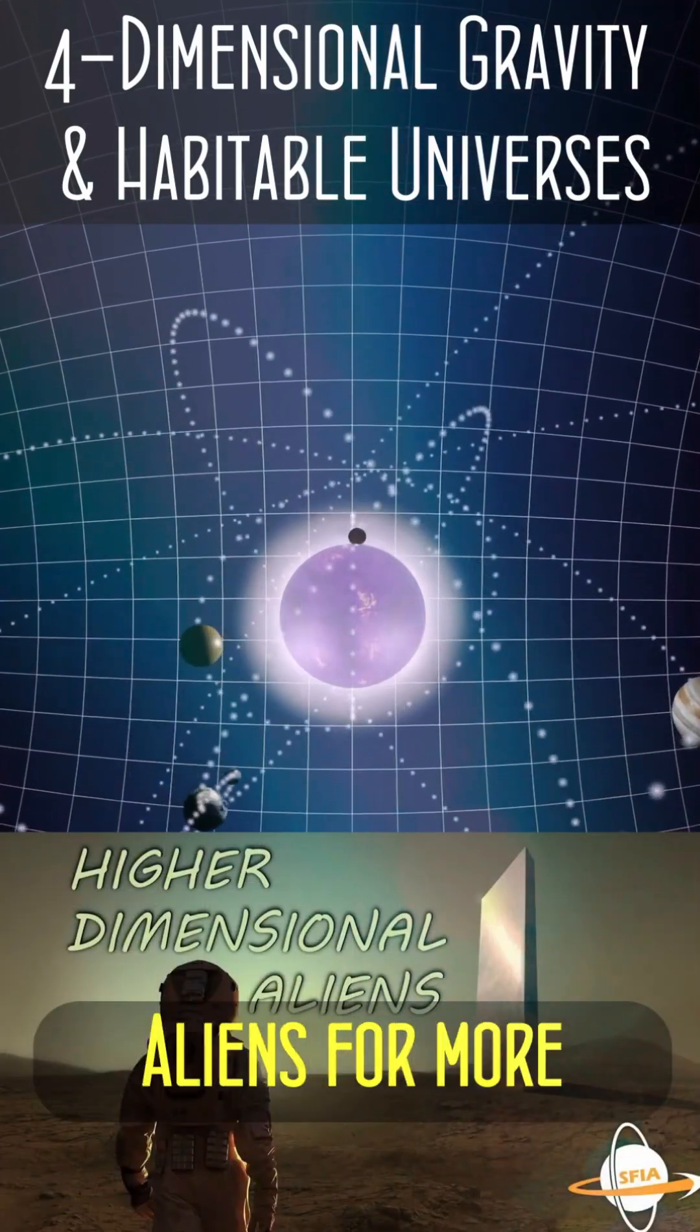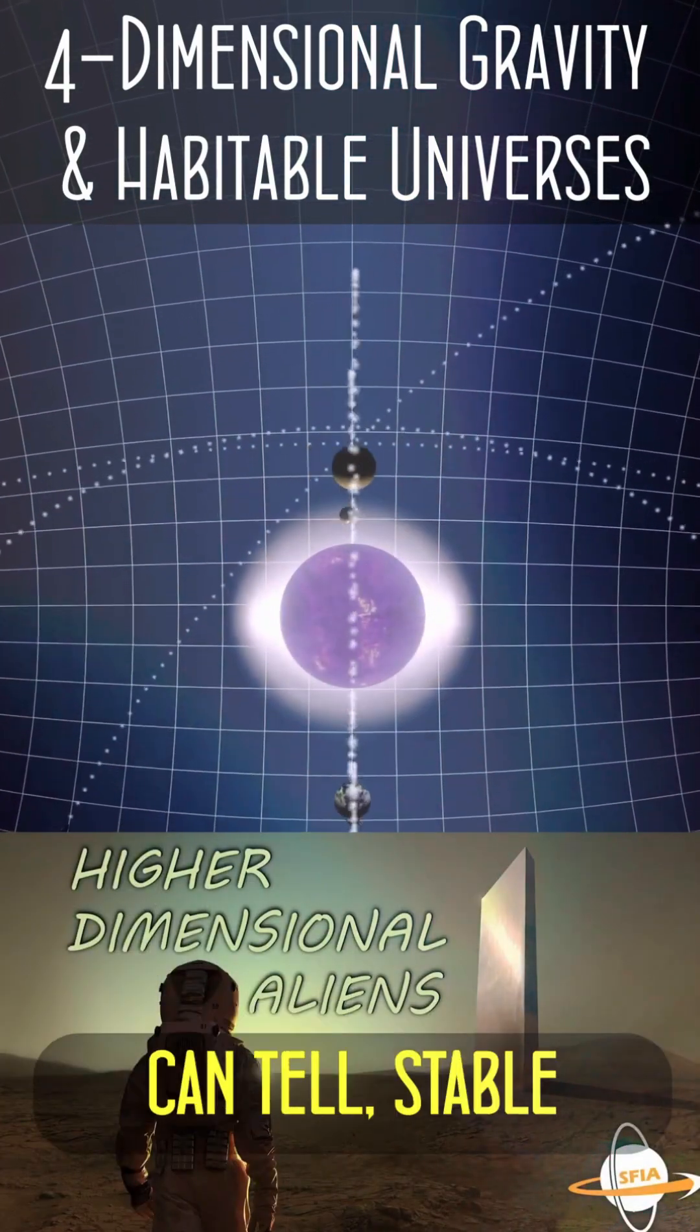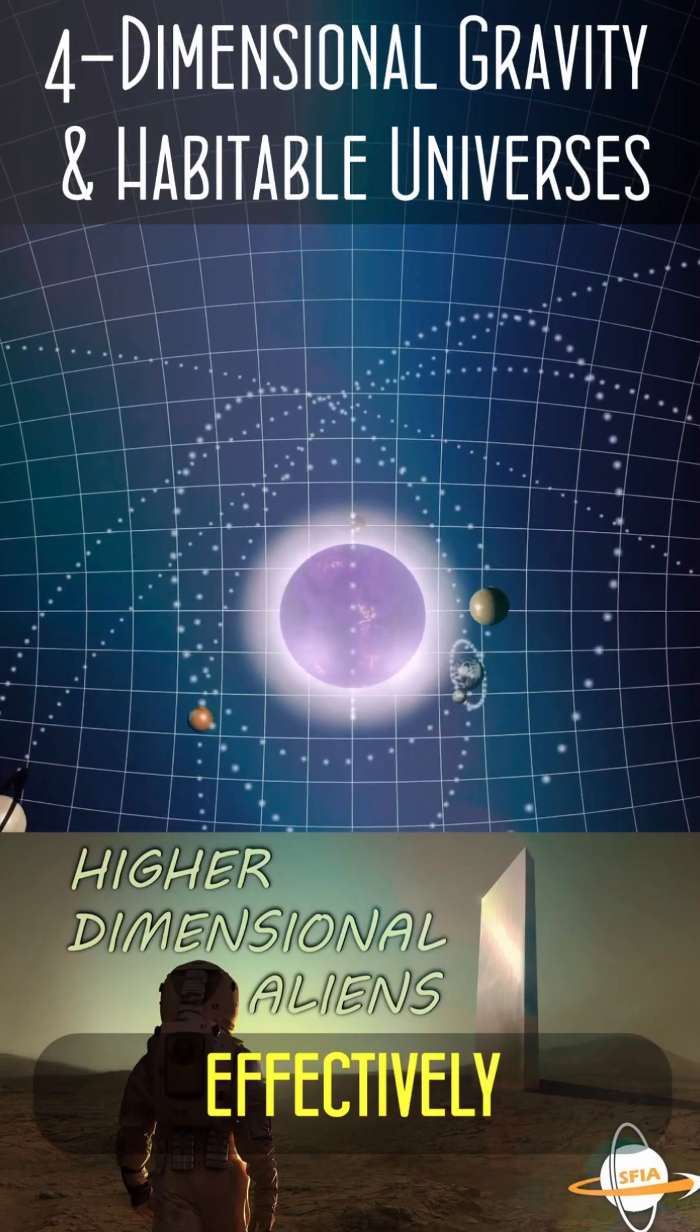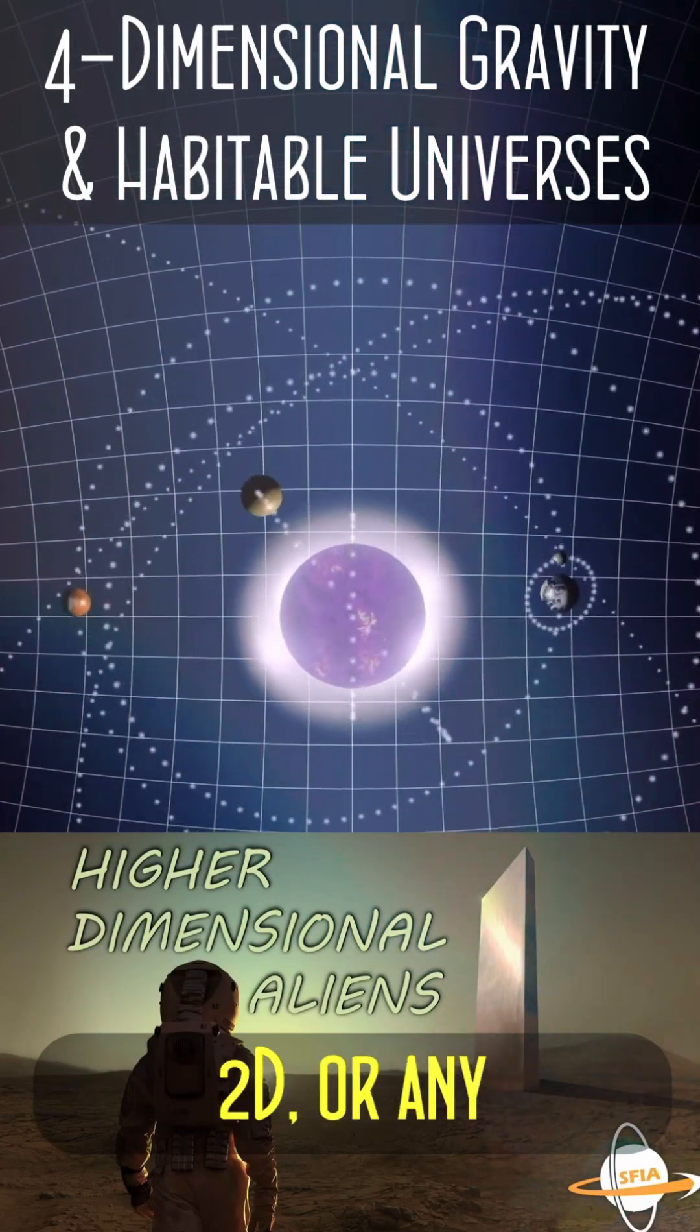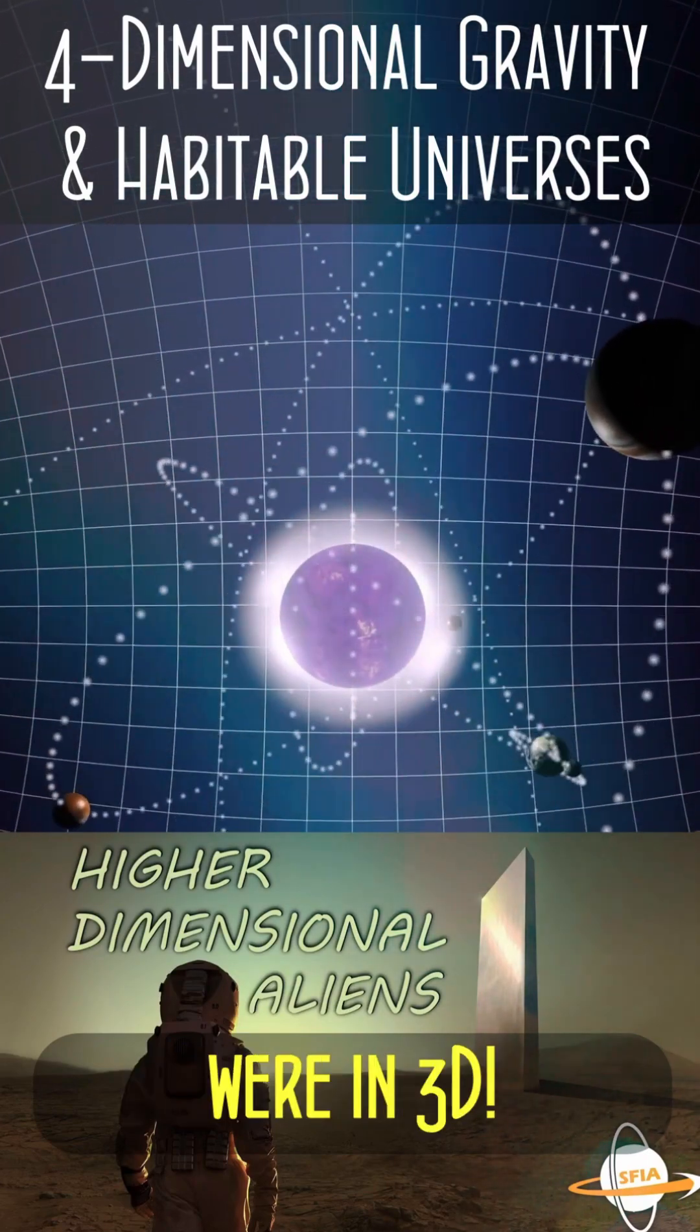See our episode higher dimensional aliens for more discussion. But as best as we can tell, stable orbits are effectively impossible in 4D, 2D, or any higher dimension. Good thing we're in 3D!